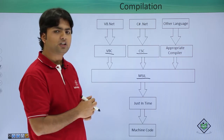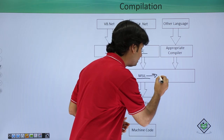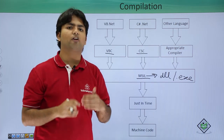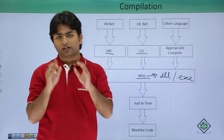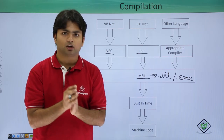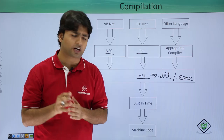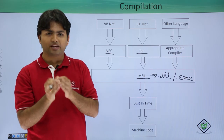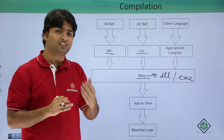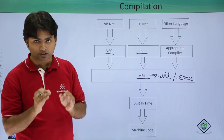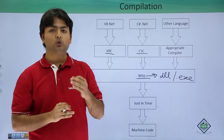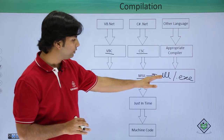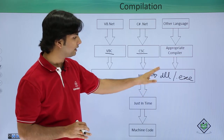This Microsoft Intermediate Language code will be placed either in a DLL file or in an EXE file, depending on how you have written the code. If you have written a program with the main method, which is the starting point of execution, the result will be an executable .exe file. If you want your code to be used as a library without a main method, the result will be a .dll, that is a Dynamic Link Library.